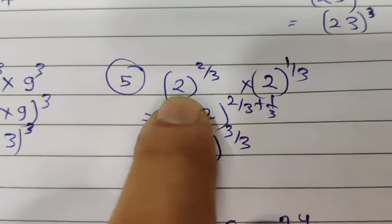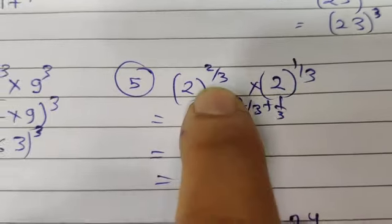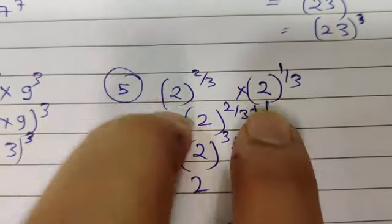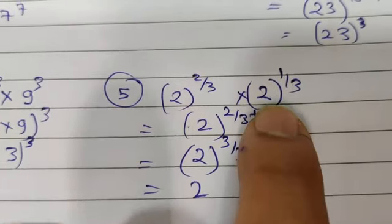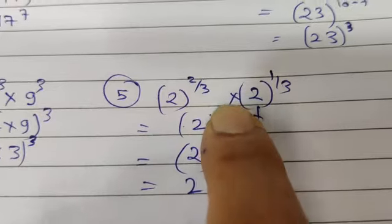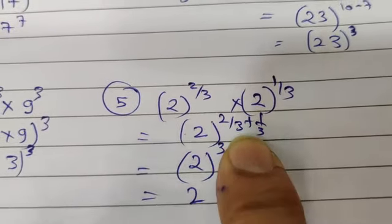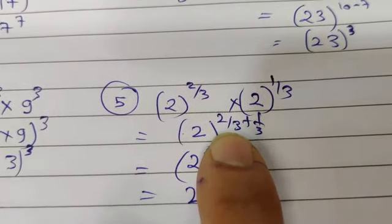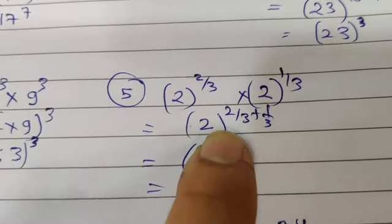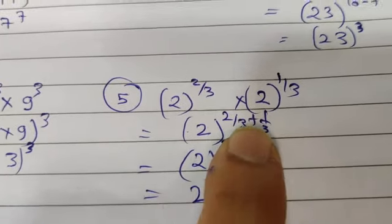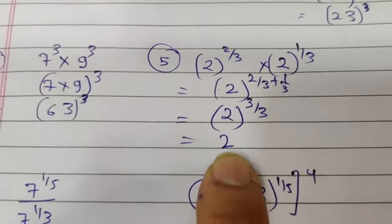The next example has the same base but powers in the form of rational numbers. We apply the first law of exponents — bases are the same and powers are different, so we add the powers. We are adding 2 by 3 plus 1 by 3. Since the denominators are the same, we get 2 plus 1 over 3, which is 3 over 3, which simplifies to 1. So the final answer is the base to the power 1, which we write simply as the base.